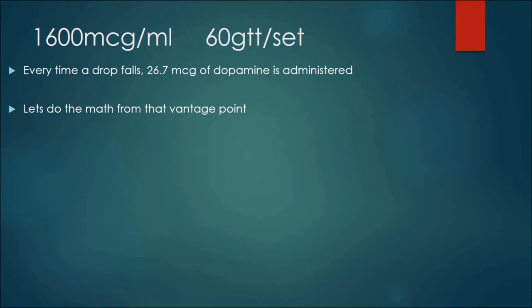So you've got 1600 micrograms per ml and you're going to give it to a 60 drop set, or 60 gtts if you prefer the word gtt. Every time a drop falls in a chamber, 26.7 micrograms of dopamine is administered. I want you to think of it that way. If you're looking for the clock, I'm not going to include it here. The clock is taught in every classroom in America. So I'm going to do something a little bit different here for the people that their brain doesn't click when they see the clock. I want you to think of it as every drop is 26.7 micrograms.